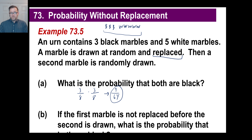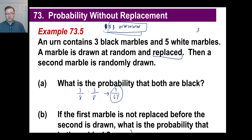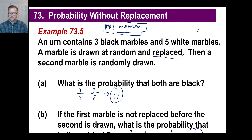Now look at part B: if the first marble is not replaced before the second is drawn, what's the probability that both are black? Starting with 3 black and 5 white, the first probability is still 3 out of 8. But now you've drawn that black marble out and it's gone. Now you have 2 black marbles left out of 7 total. So multiply 3/8 by 2/7 to get 6 out of 56, which reduces by 2 to give 3 out of 28. That's the difference between with and without replacement.